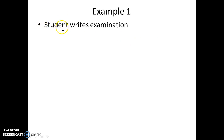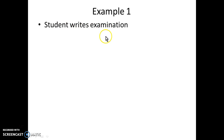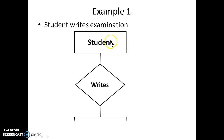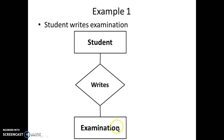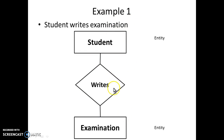Here we have to identify the nouns and the verb. 'Student' and 'examination' become nouns, and 'writes' is a verb. So student becomes an entity, and for an entity we use a rectangle. Similarly, examination also becomes an entity, and for an entity we use rectangles. So these are two entities associated with each other through the 'writes' relationship.